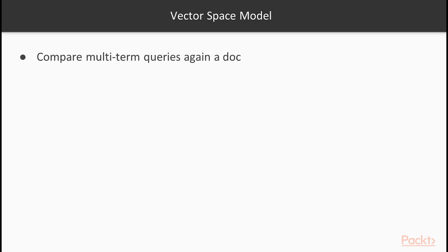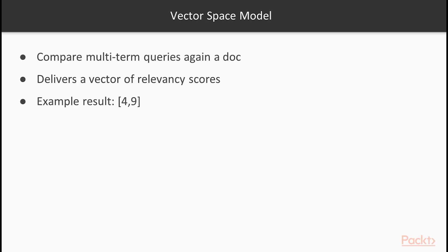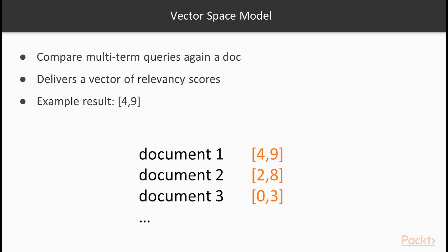The vector space model is used to compare multi-term queries against a given document. The result is a vector of numbers, each of which represents the relevancy score of a term in the document. Say you have a document and you query 'car' and 'flight', and assume that the relevancy scores were 4 and 9 for car and flight respectively — the results would appear as [4, 9]. Think of a vector as a one-dimensional array of numbers. Once the final vectors are produced for all documents, they can be compared to determine highest to lowest in relevancy. As you can see, document 1, 2, and 3 each have a different relevancy score in a vector.